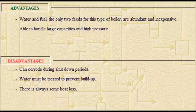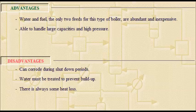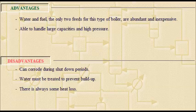Water and fuel, the only two feeds for this type of boiler, are abundant and inexpensive. It can handle large capacities and high pressure. But it corrodes during shutdown periods and water must be treated to prevent build-up. There is always some heat loss.